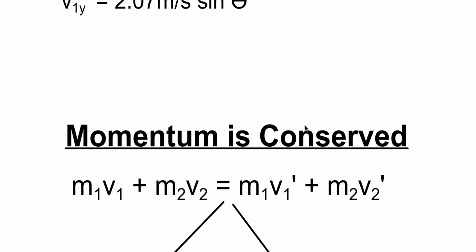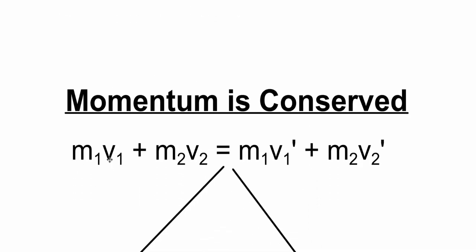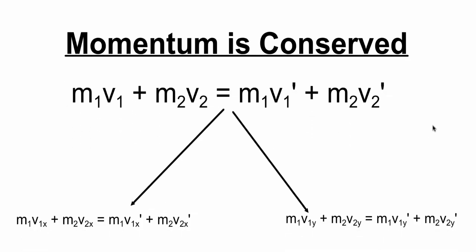We do know that momentum has to be conserved, which means m1v1 plus m2v2. This is before the interaction. After the interaction, it's m1v1' plus m2v2', and we can actually put it into components. So, this is the x components before the interaction, the x components after, same thing with the y.